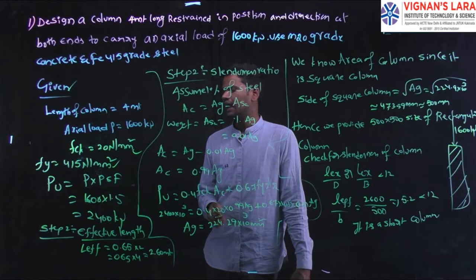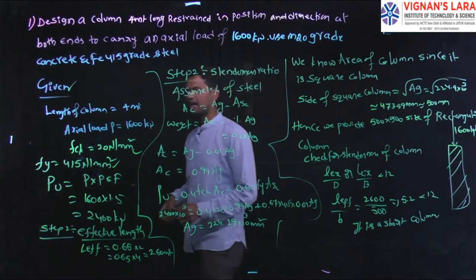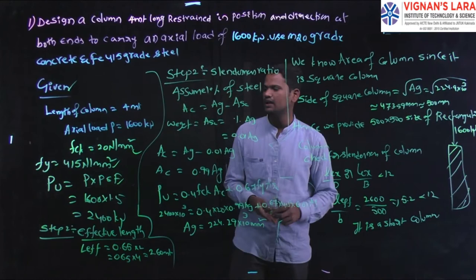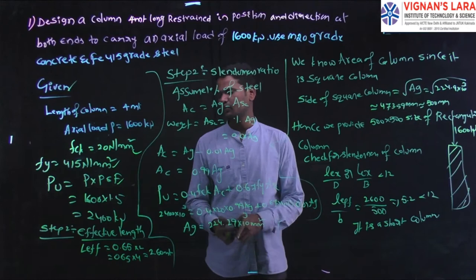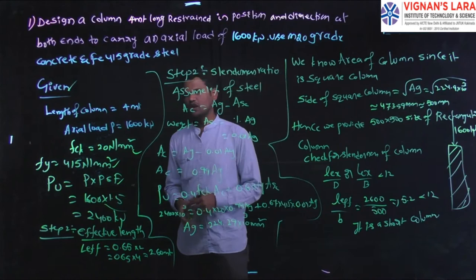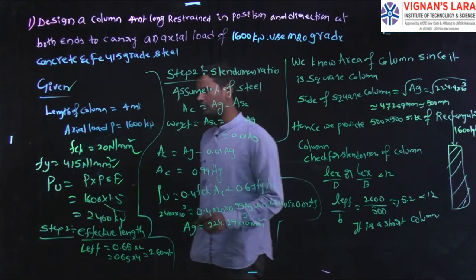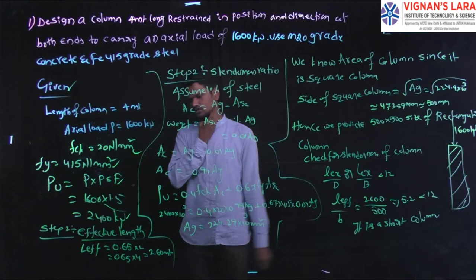The factored load — the ultimate load acting on the column — is calculated with respect to the partial safety factor. We take the partial safety factor as 1.5 for the limit state of collapse under compression. Therefore, the ultimate load Pu equals 1.5 × 1600 = 2400 kilonewton.